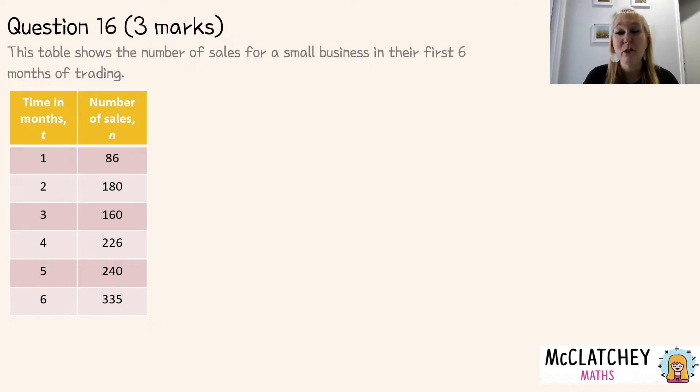We've got two questions today. The first question on Paper 1 was question 16 and it was worth three marks. It says this table shows the number of sales for a small business in their first six months of trading. In part A we're asked to use our calculators to determine the equation of the least squares line and this is worth one mark. Now I have a Casio calculator so I'm going to be showing you on that one today but there are a range of other calculators that are allowed to be used by the QCAA for your exam.